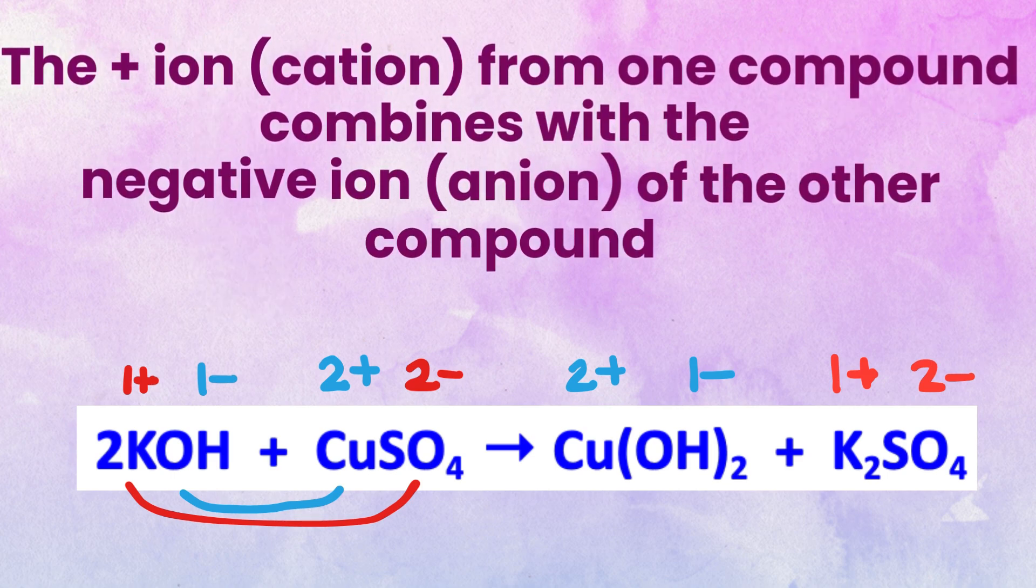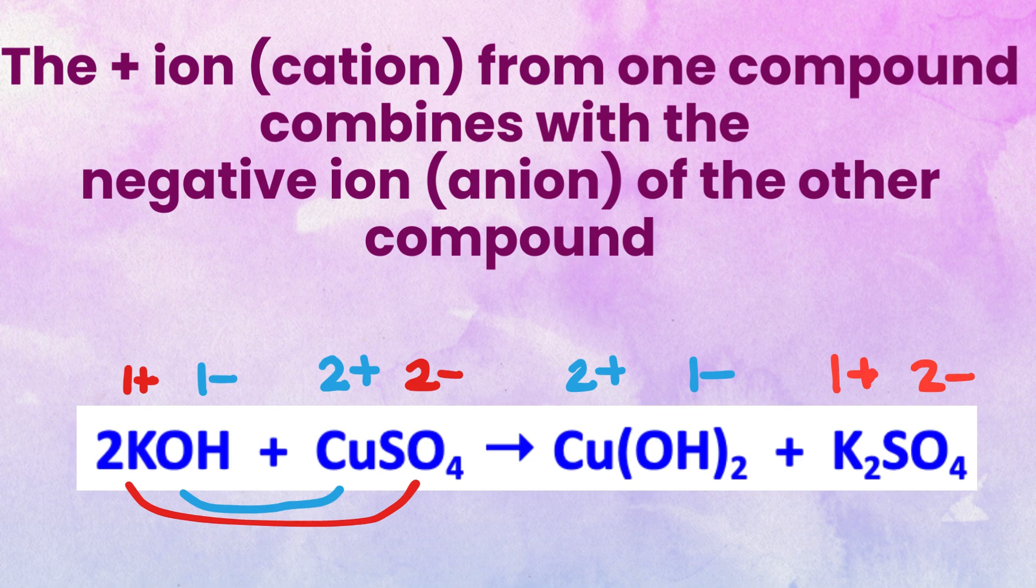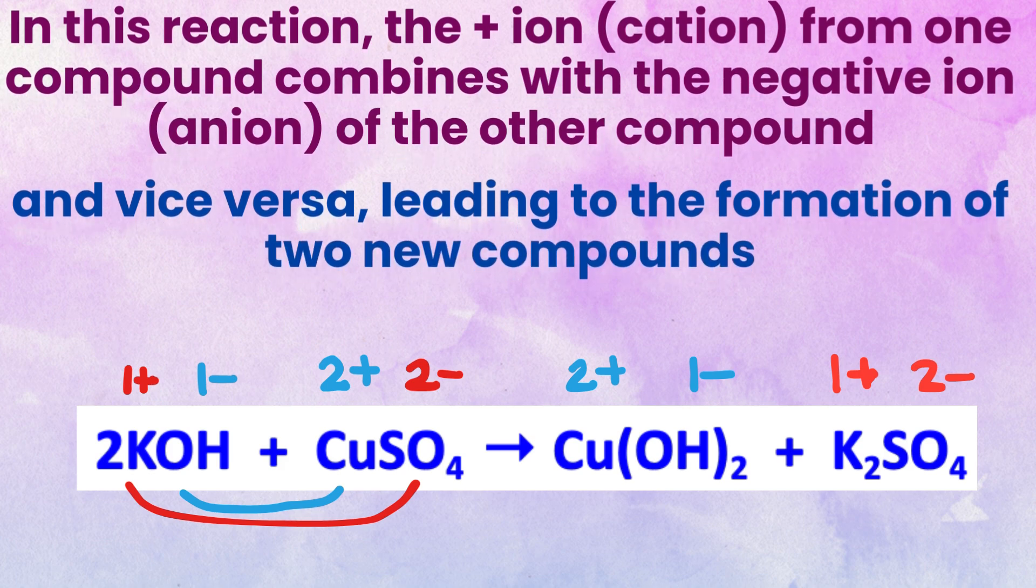So we can say that in a double replacement reaction, the positive ion or the cation from one compound combines with the negative ion or the anion of the other compound and vice versa, leading to the formation of two new compounds.